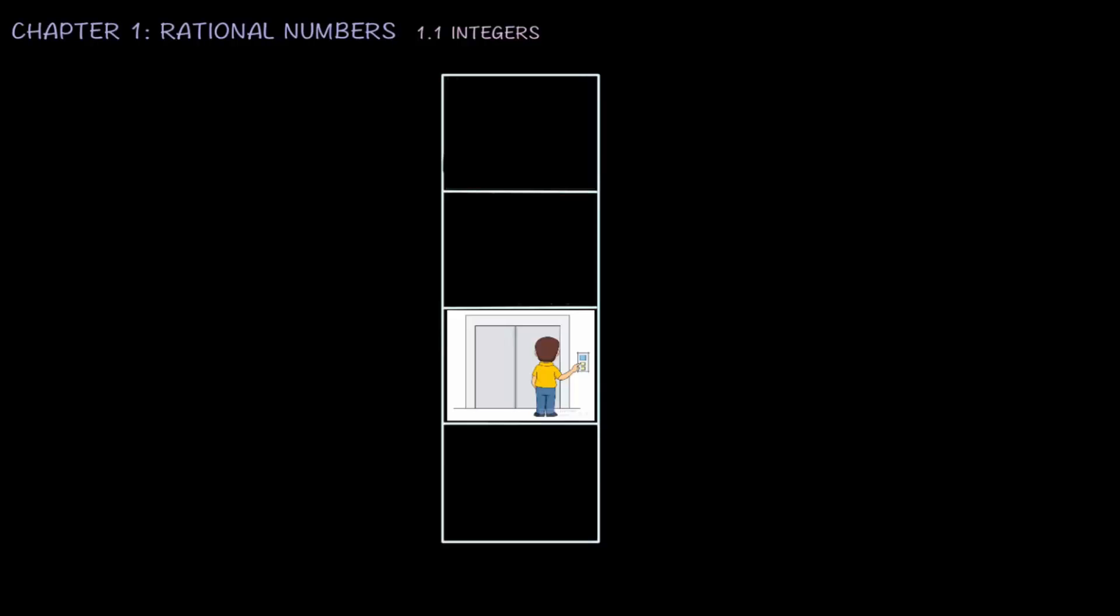For instance, this is an elevator at the ground floor. The level above the ground floor would be the first floor, and the level above it would be the second floor. Meanwhile, the lower one is the lower ground floor. When this elevator is going up two floors, we can write it as plus two or two because it is going up. This is when we use the positive numbers.